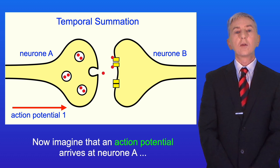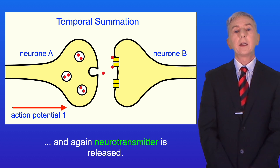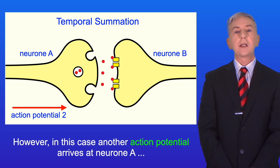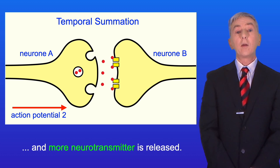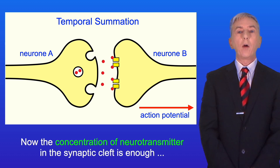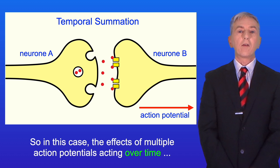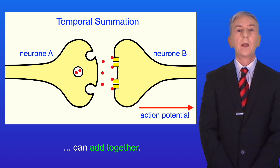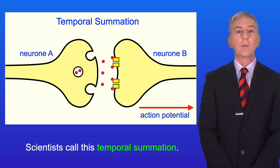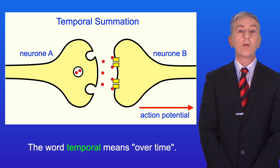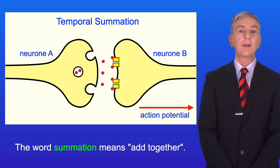Now imagine that an action potential arrives at neuron A and again neurotransmitter is released. However, in this case, another action potential arrives at neuron A and more neurotransmitter is released. Now the concentration of neurotransmitter in the synaptic cleft is enough for neuron B to reach the threshold and trigger an action potential. So in this case, the effects of multiple action potentials acting over time can add together. Scientists call this temporal summation. The word temporal means over time and the word summation means add together.